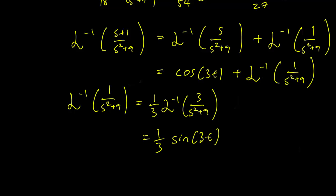And this means that the Laplace inverse transform of s plus 1 over s^2 plus 9 is equal to cosine 3t plus 1 third sine 3t.